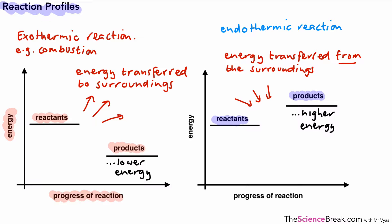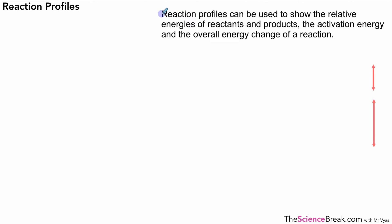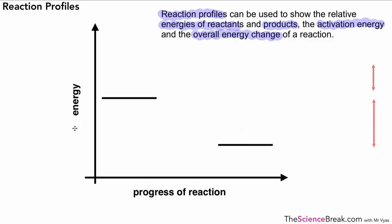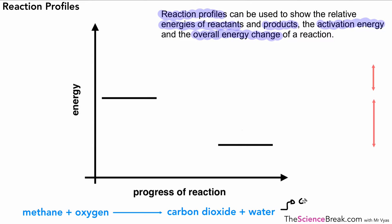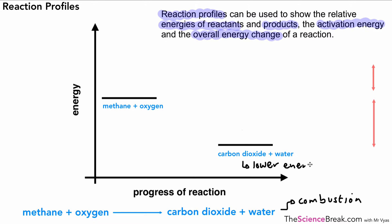Now what we can do is put some of our ideas together from this video and look at a reaction profile that includes everything we've talked about. Reaction profiles can be used to show the relative energies of the reactants and products, the activation energy, and the overall energy change of a reaction — all shown in one diagram. Here is a reaction profile diagram for the reaction of methane with oxygen to produce carbon dioxide and water, which is a combustion reaction. You can see the products are at a lower energy level than the reactants, so the energy of carbon dioxide and water is lower than that of methane and oxygen.